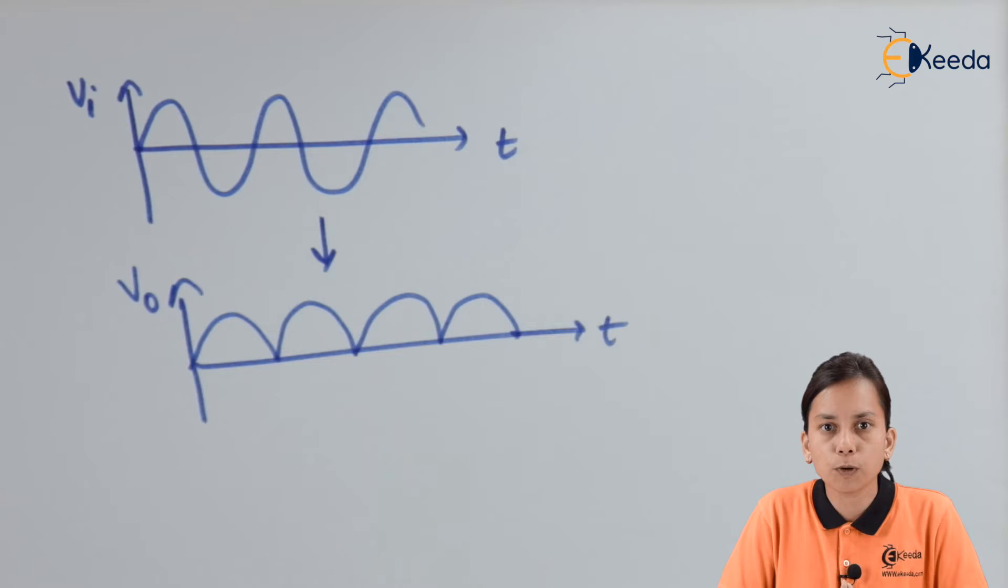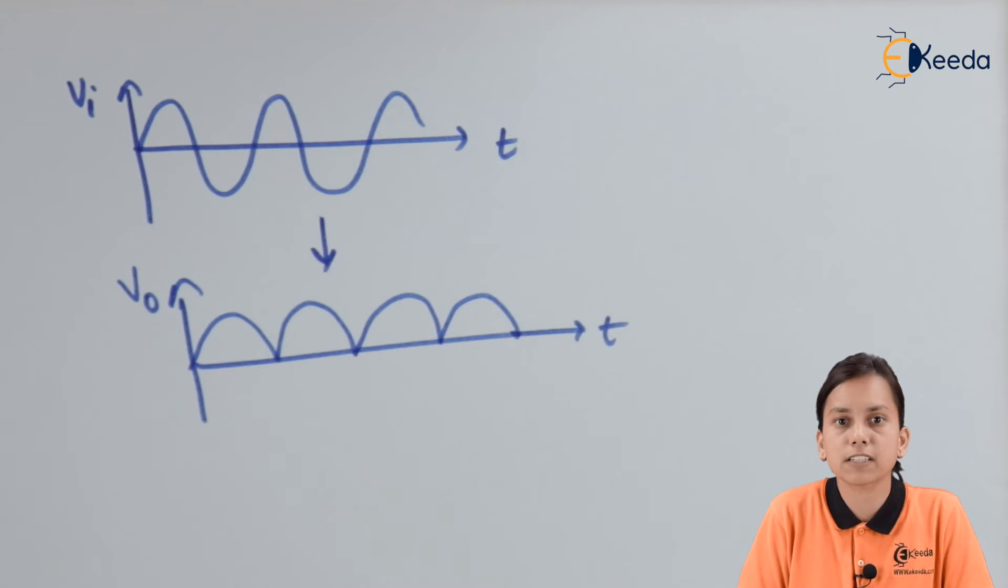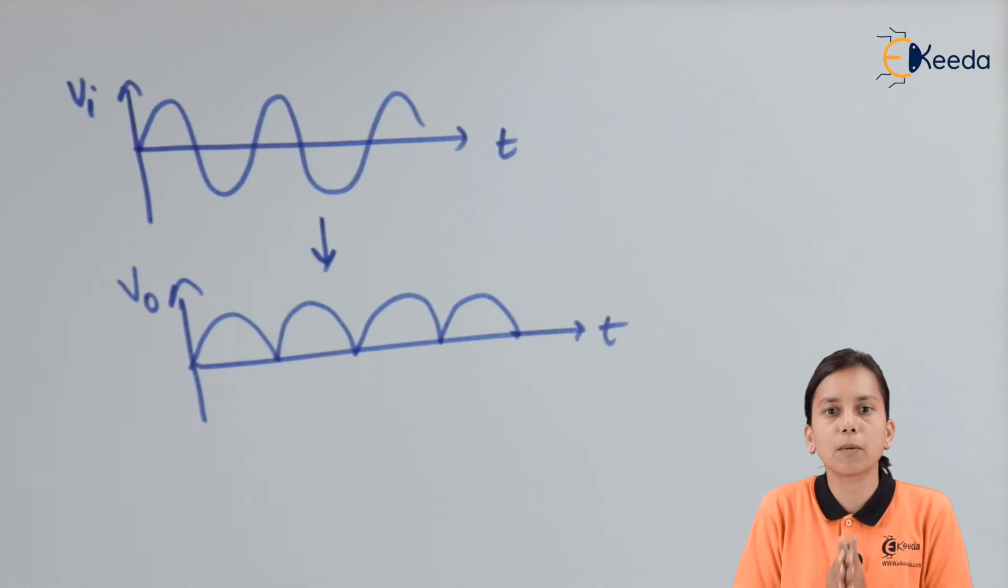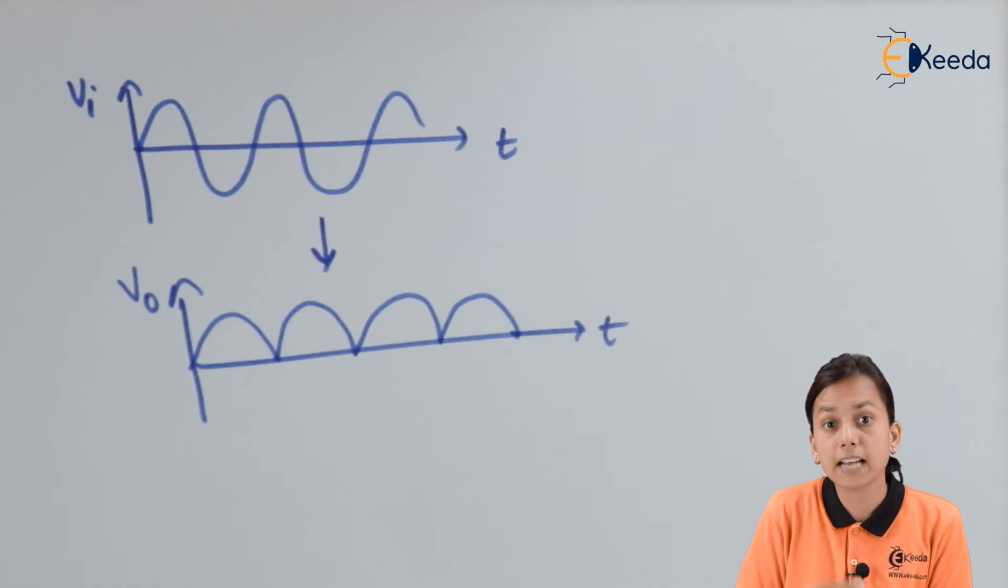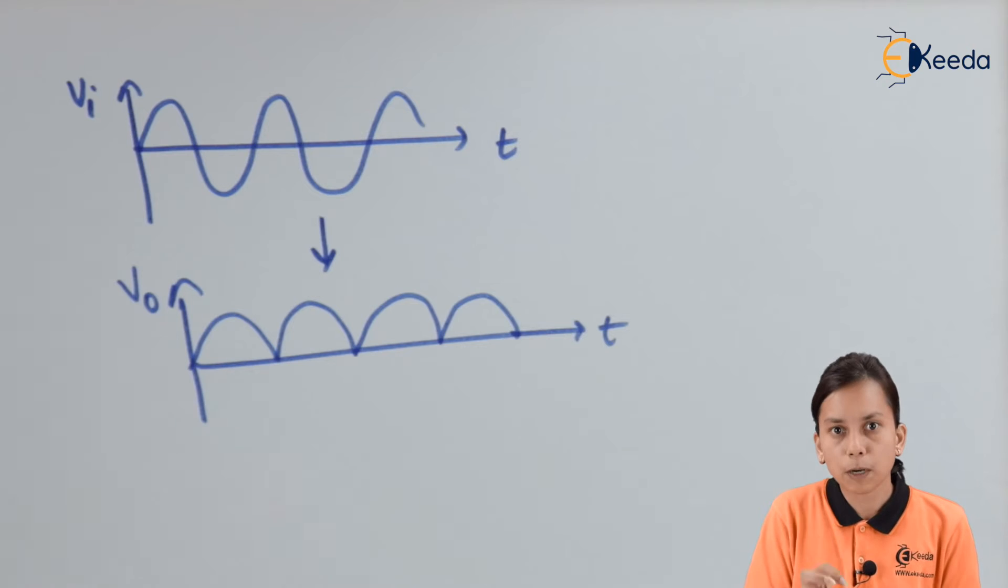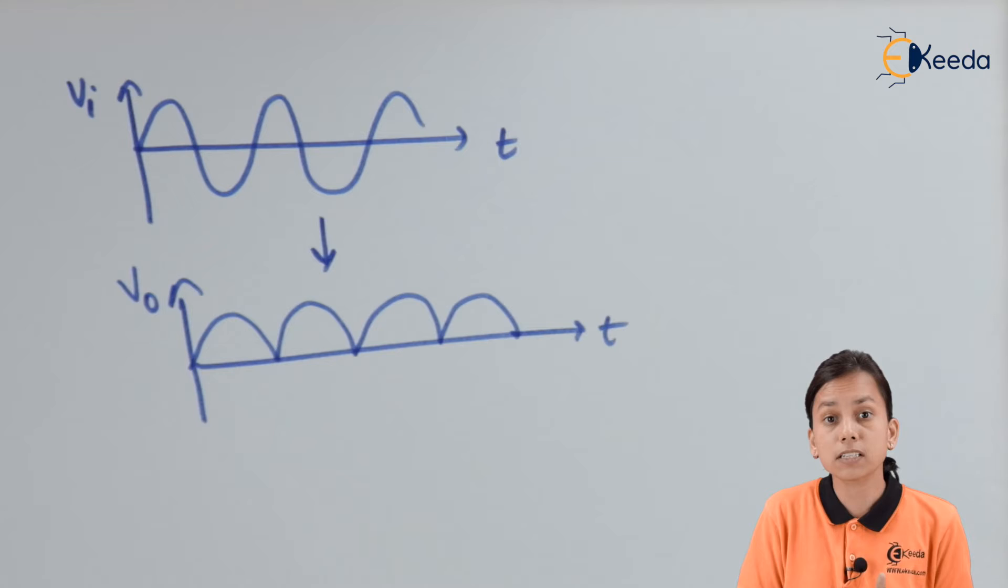We are not getting output which is having less ripple. Still we are talking about ripple that it has some amount of AC portion. To remove that rippleness in our signal or in our output we need such a circuit which can remove that ripple is known as filter.